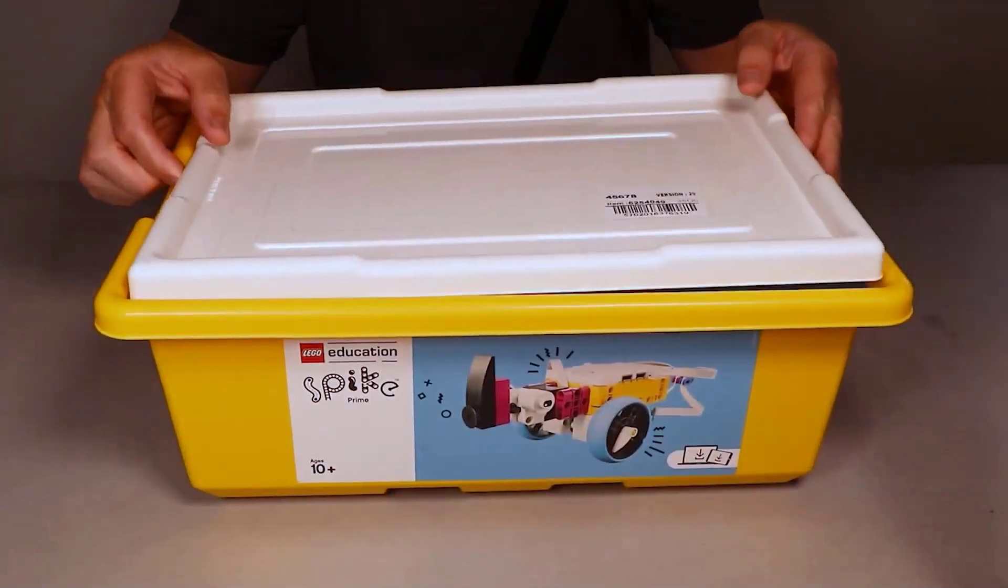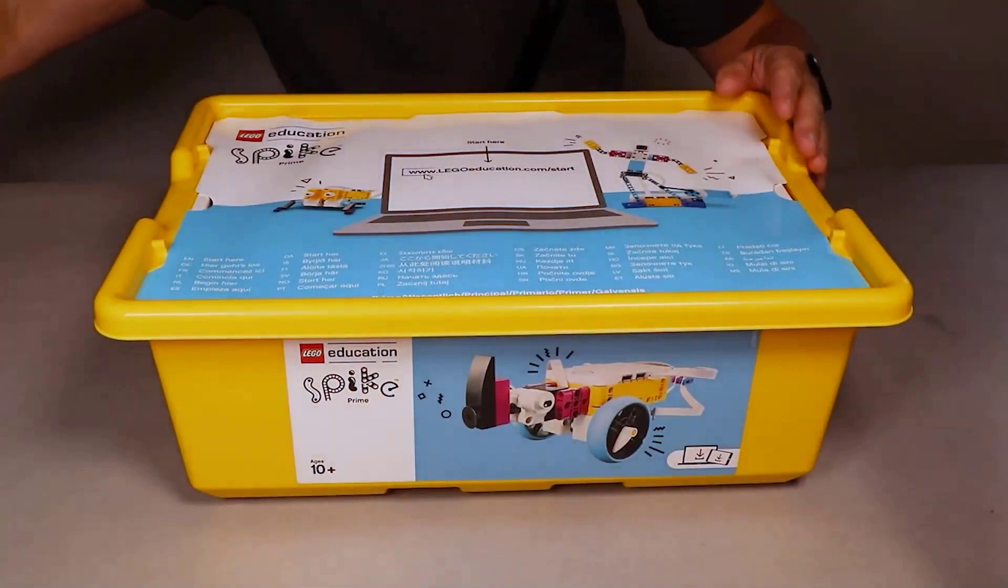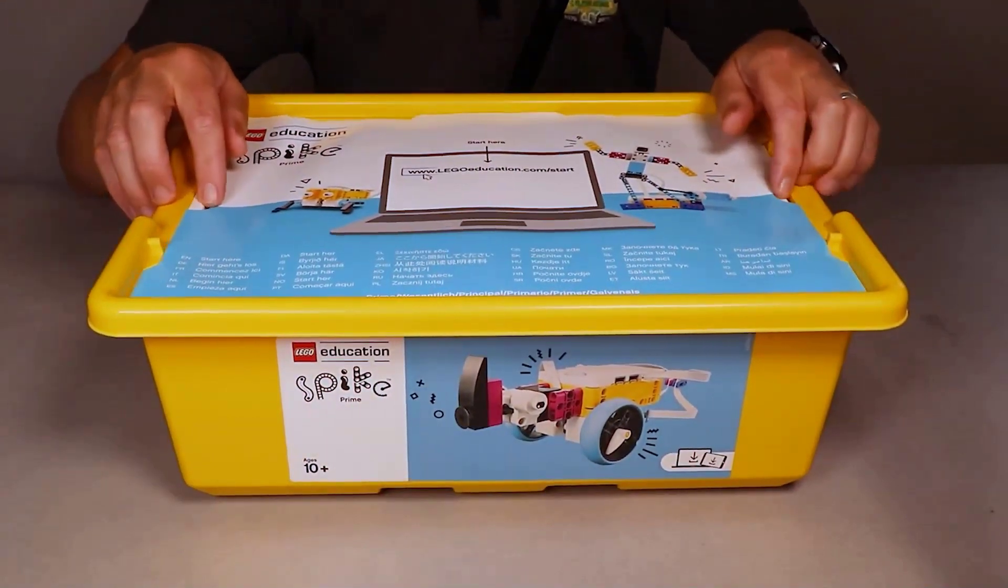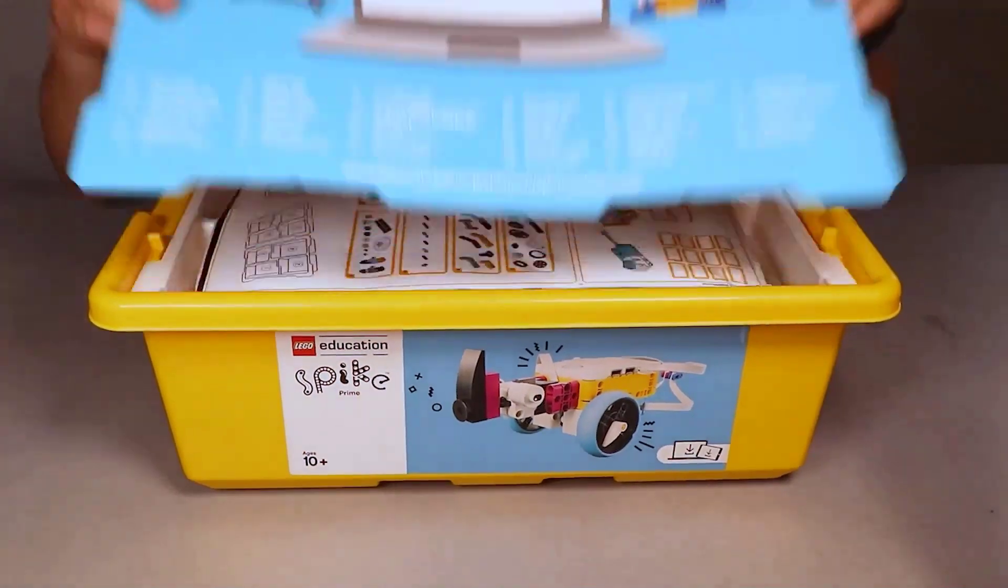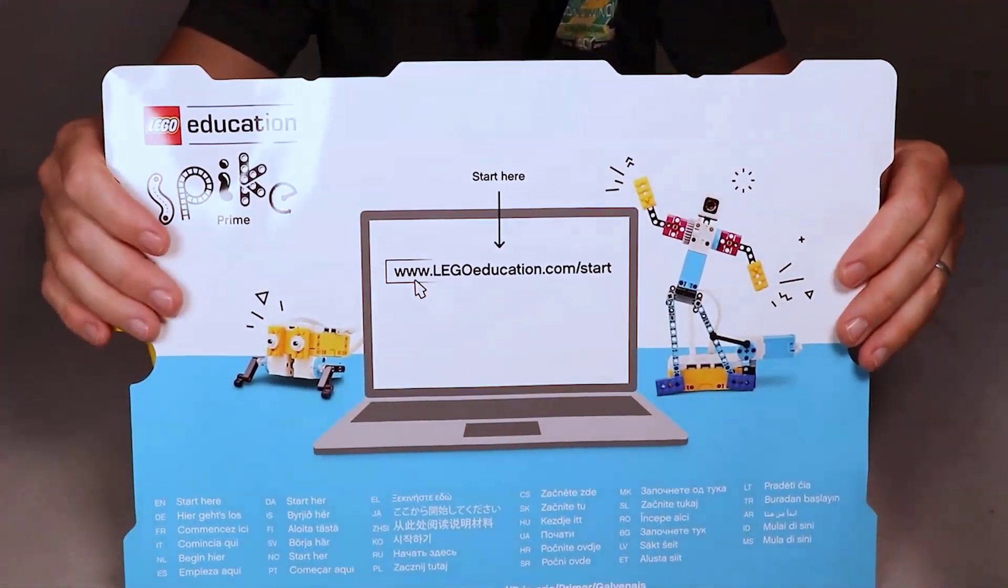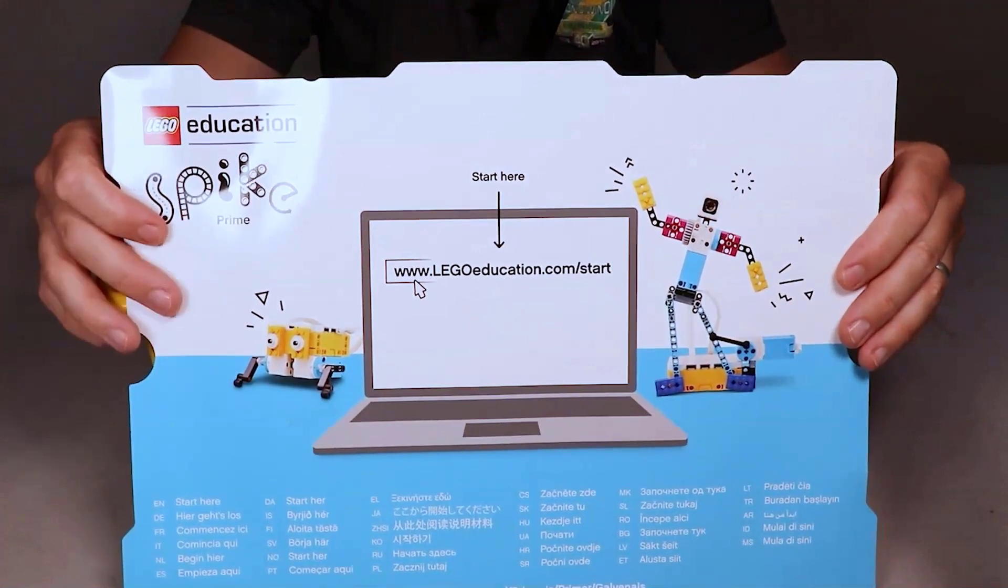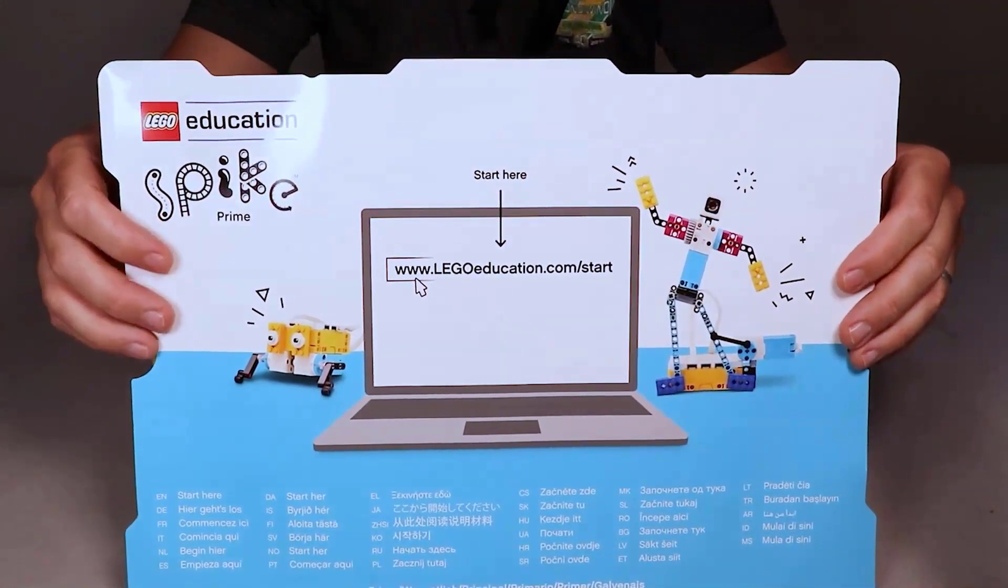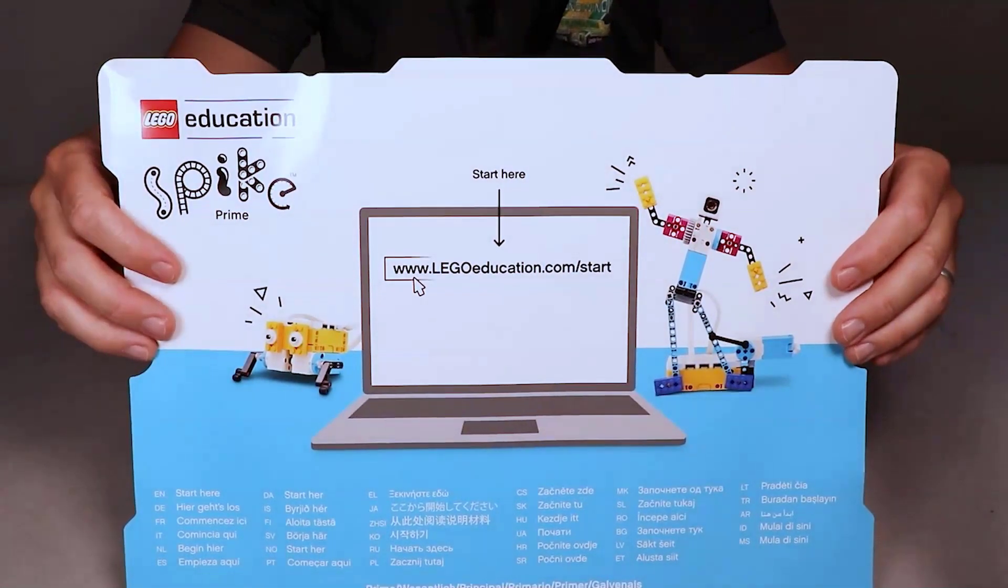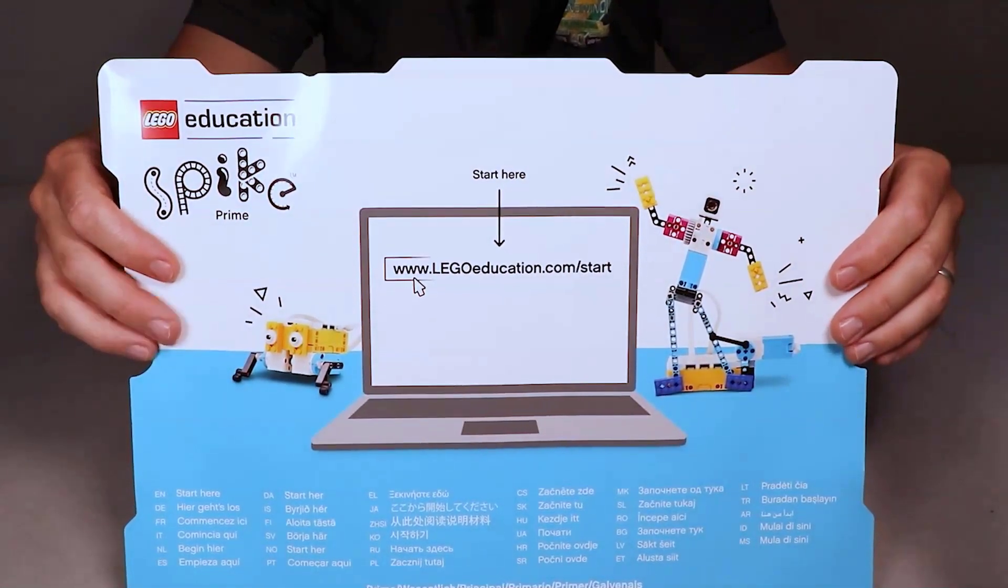So here is our box. We have unsnapped the packing cord, and right on top you'll have an insert. On the front side is an indication to go to legoeducation.com/start. We'll go through all those steps in our next video together. But on the other side of this is a great resource that's going to show you exactly how your whole Spike Prime box should be laid out.